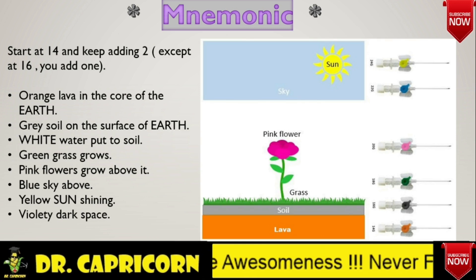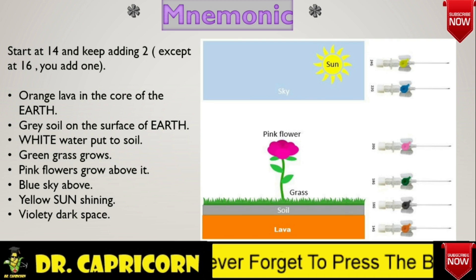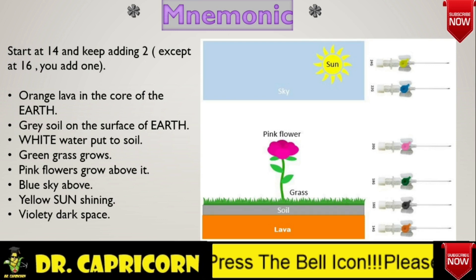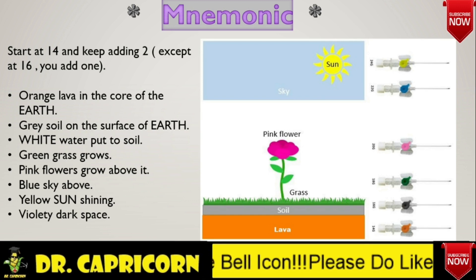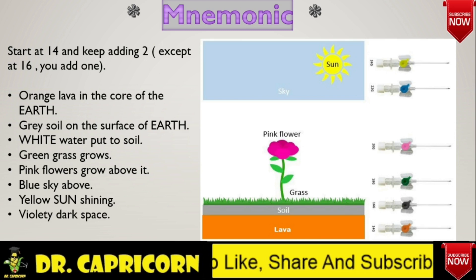14 gauge is orange in color, similar to the core of the earth. 16 gauge is gray in color, resembling soil over the surface of earth. 17 gauge is white in color, recently asked in AIIMS exam, resembling transparent water-like. 18 gauge is green color, resembling green grass or leaves of a tree. 20 gauge is pink color, resembling pink flowers.